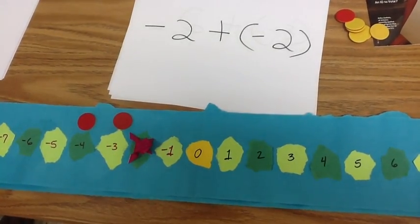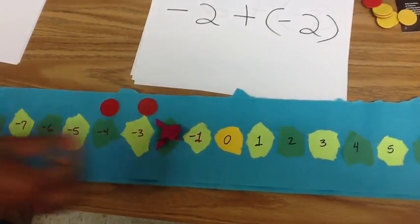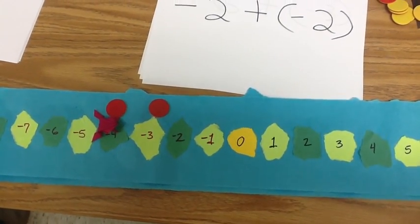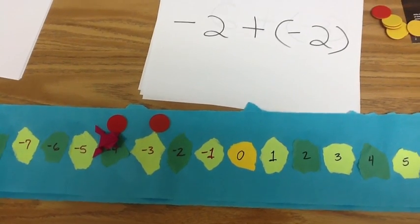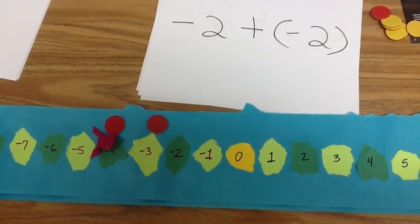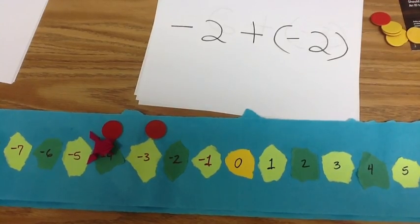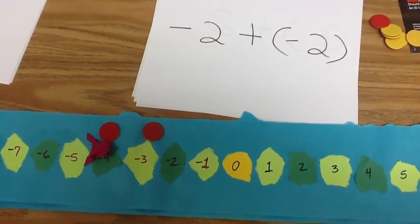And then our frog will jump backwards and land on negative four. So the sum of negative two plus negative two is negative four. Excellent. So that is our first lesson for our frogs. Our next lesson will be subtracting.